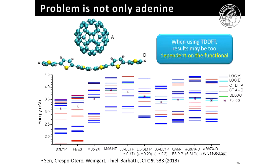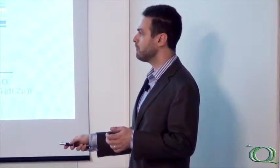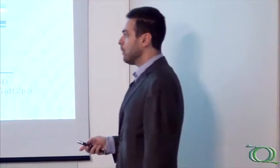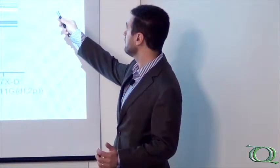If you compute the vertical electronic spectrum of this complex with several functionals using time-dependent DFT, you basically have whatever result you want. With a hybrid functional like B3LYP, the most used functional, you get the charge transfer states—the red states—as the lowest state.